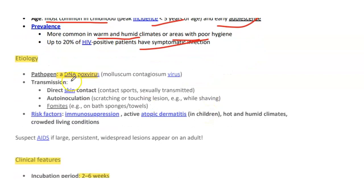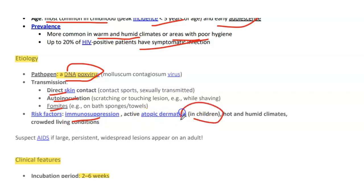Etiology: it is a DNA pox virus and its transmission is either direct, auto-inoculation, or through fomites. Risk factors include immunosuppression, active atopic dermatitis in children, hot and humid climates, and crowded living conditions. Suspect AIDS if large, persistent, widespread lesions appear in an adult.